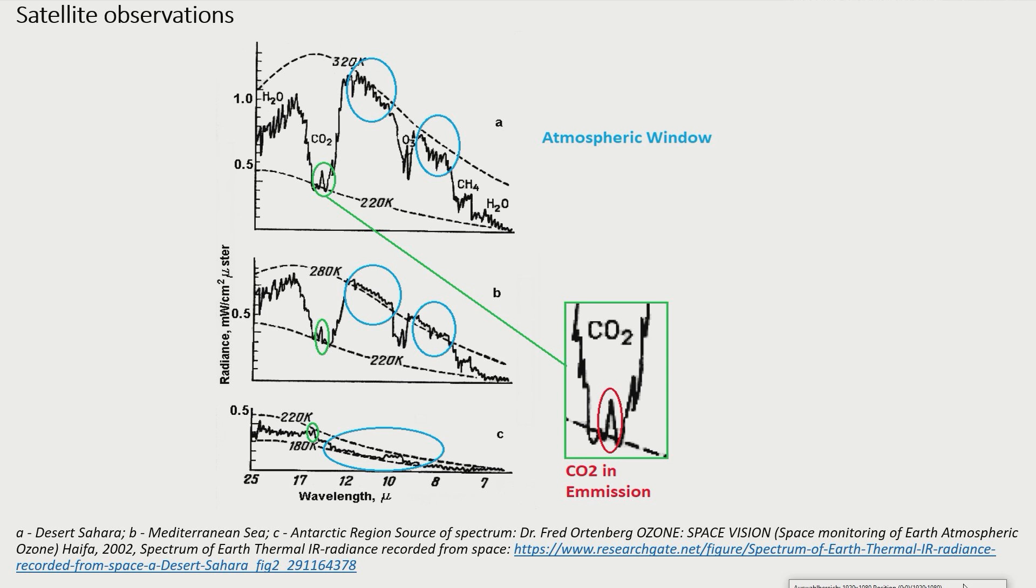The solid zigzag line in spectrum B shows the infrared radiation measured over the Mediterranean. In this spectrum, the so-called atmospheric window can be seen very clearly.